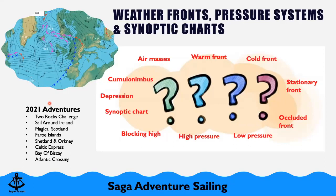When doing passage planning, always take the forecast that gives you the worst weather — don't pick the one that suits your passage. You might be pleasantly surprised, but plan for the worst and hope for the best. Check more than one source, especially for offshore sailing and longer passages. When we were crossing the Bay of Biscay we checked the weather 10 days before, monitoring forecasts to make sure we had the right weather window.